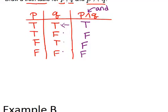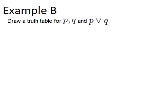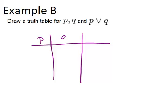All right, second example. Draw a truth table for P, Q, and P or Q. So the same thing except this time we're doing OR instead of AND. Again we're going to have three columns for P and Q each by themselves and then P or Q.